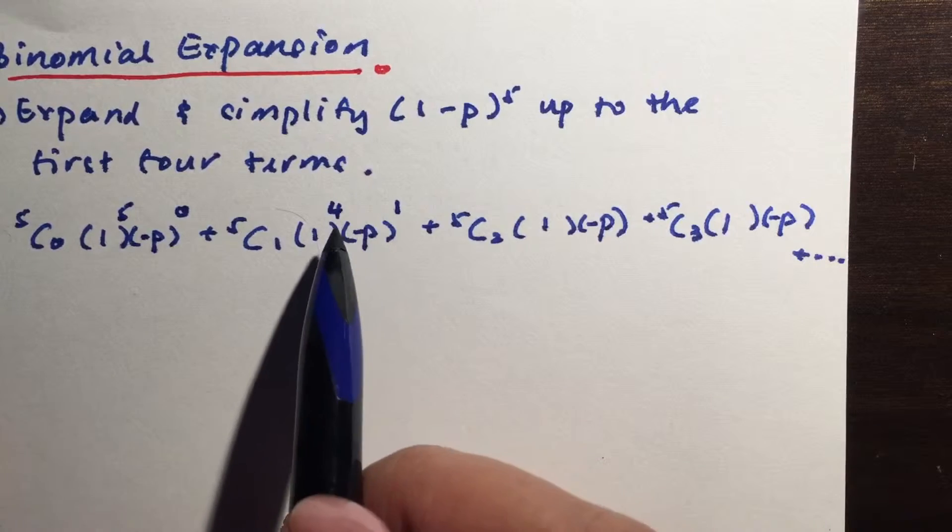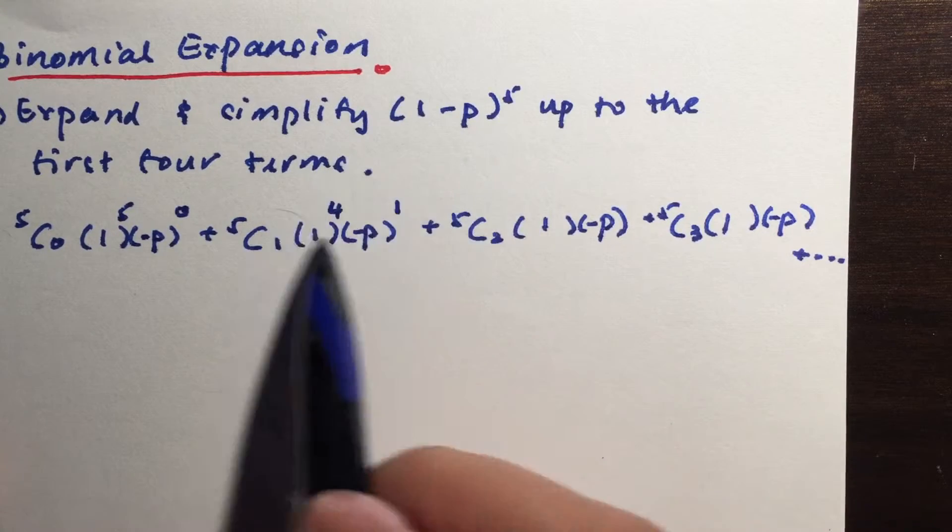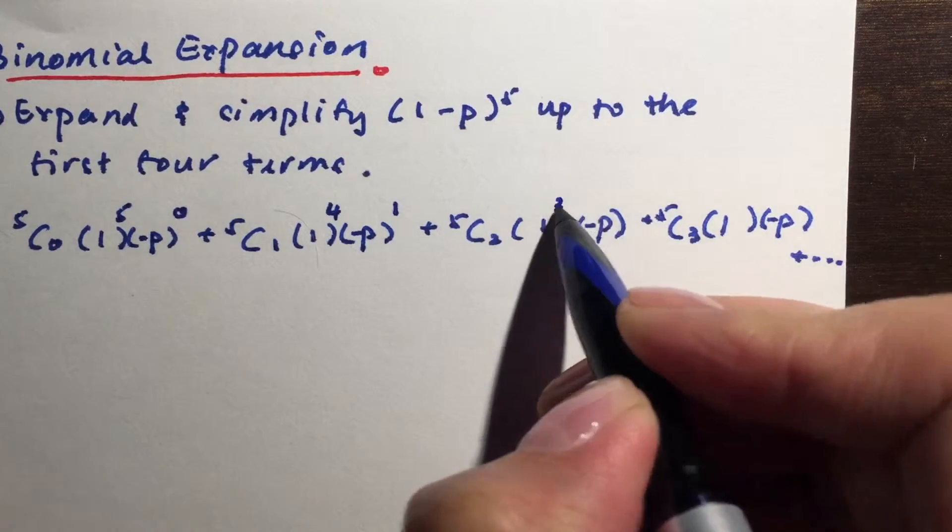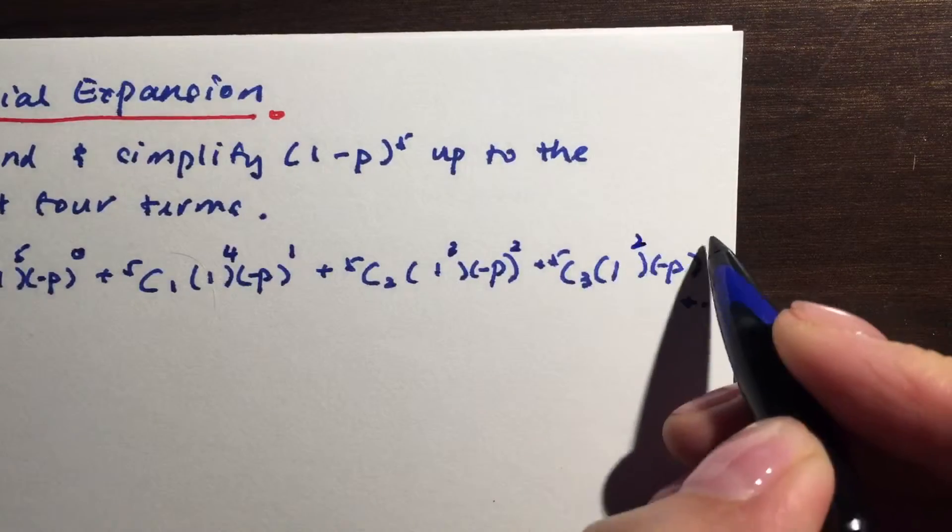Now to check, just add 4 to 1 and you get 5, so it must always add up to the exponent that you have here, right? So we have 3 and 2, 2 and 3.